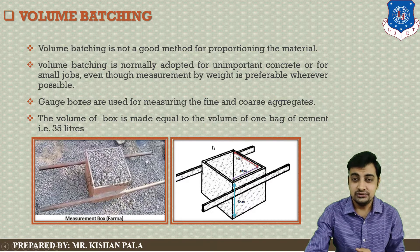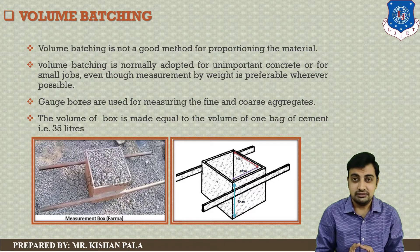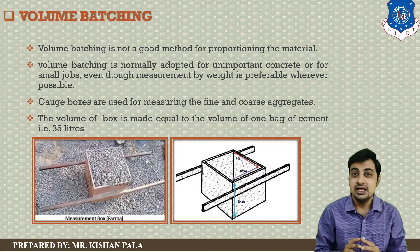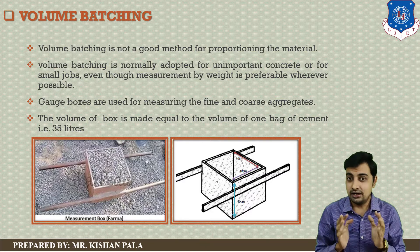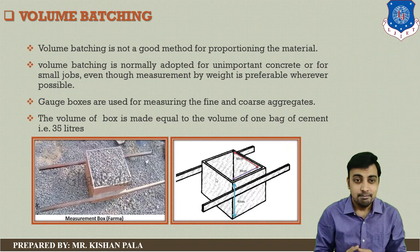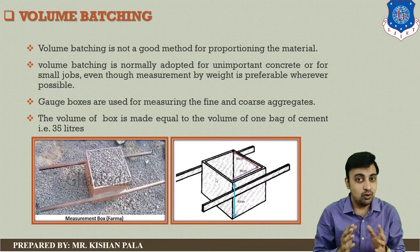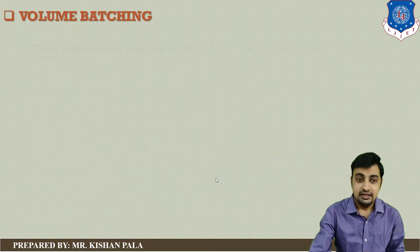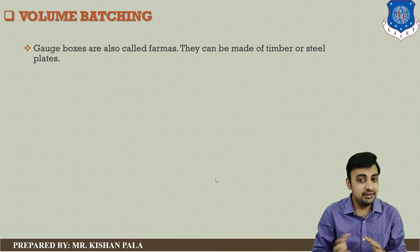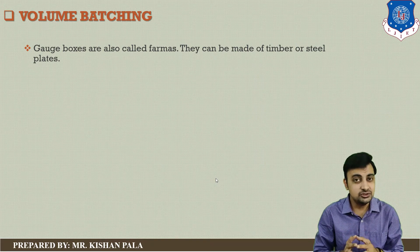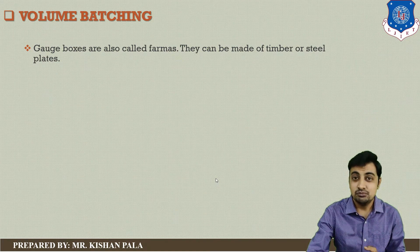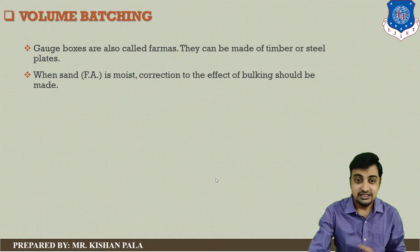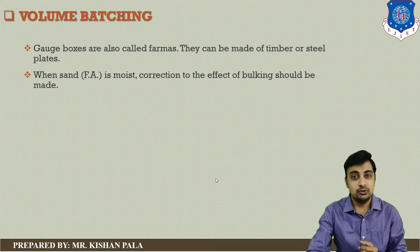Generally we use 35 liters volume firmas, because this is easily used for calculation with other ingredient proportions with respect to the cement volume. In general we use a 35-liter firma in volume batching because 35 liters is the volume of one cement bag. Gauge boxes are also called firmas and can be made of timber or steel — generally steel firmas are used. When the fine aggregate is moist, a correction for the effect of bulking should be made.